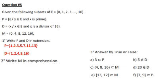We need to write M in comprehension. As you can see, M is 0, 4, 8, 12, 16. So M, X belongs to E, such that X is a multiple of 4.